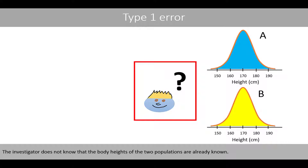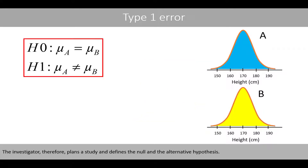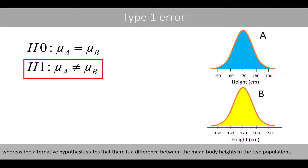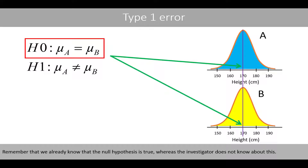The investigator does not know that the body heights of the two populations are already known. The investigator therefore plans to study and defines the null and the alternative hypothesis. The null hypothesis states that the population mean body height is the same in population A and B, whereas the alternative hypothesis states that there is a difference between the mean body height in the two populations. Remember that we already know that the null hypothesis is true, whereas the investigator does not know this.